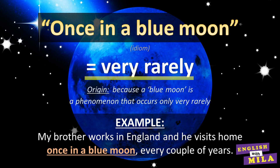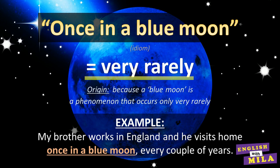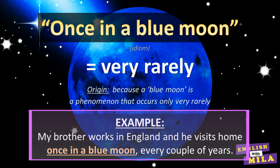There is one more thing I'd like you to learn today. 'Once in a blue moon' — it means very rarely, not very often. The origin of this idiom is explained by a fairly infrequent phenomenon: a blue moon. For example: 'My brother works in England and he visits home once in a blue moon — every couple of years.'